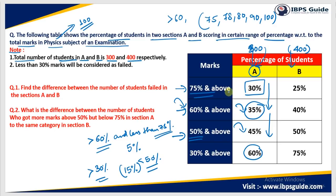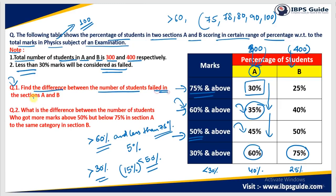Another note states that less than 30% marks will be considered as failed. I know that 30% and above is 60%, so less than 30% — the failed students — will be 100% minus 60%, which is 40%. Likewise, for section B, students scoring 30% and above is 75%, so less than 30% will be 100% minus 75%, which is 25%. Now, Question 1 asks to find the difference between the number of students who failed in section A and section B. In section A, 40% of 300 is 120. In section B, 25% of 400 is 100. The difference between 120 and 100 is 20. So my answer is 20.